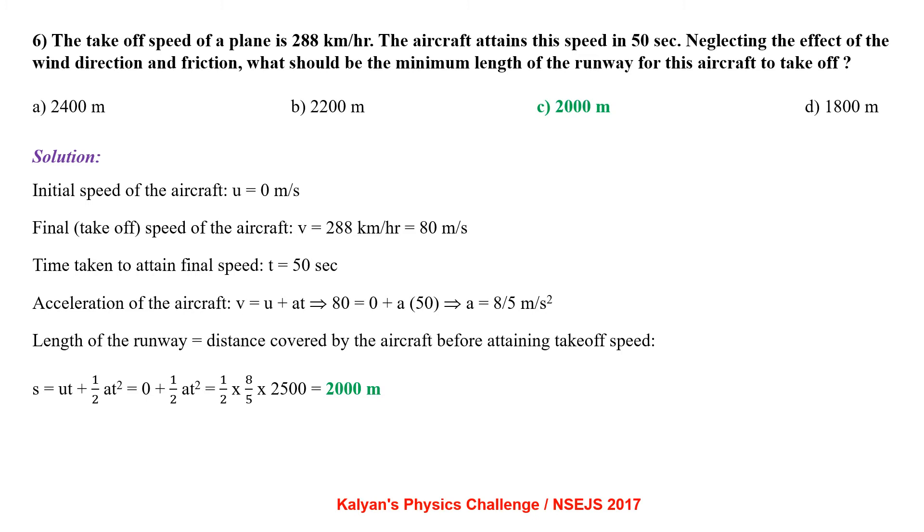Applying V equal to U plus AT we get A equal to 8 by 5 m per second square. Length of the runway that is distance covered by the aircraft before attaining the takeoff speed S equal to UT plus half AT square from which we get the length of the runway to be 2 km.